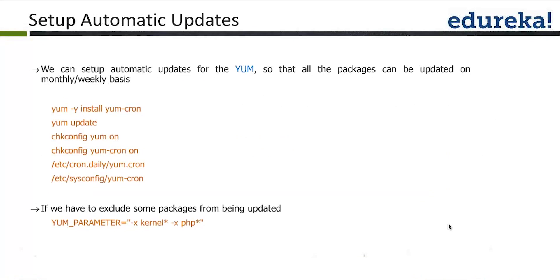This section talks about how to set up automatic updates. We can set up automatic updates for yum so that all packages can be updated on a monthly or weekly basis. The first step is to install yum-cron, which is another package: yum -y install yum-cron.